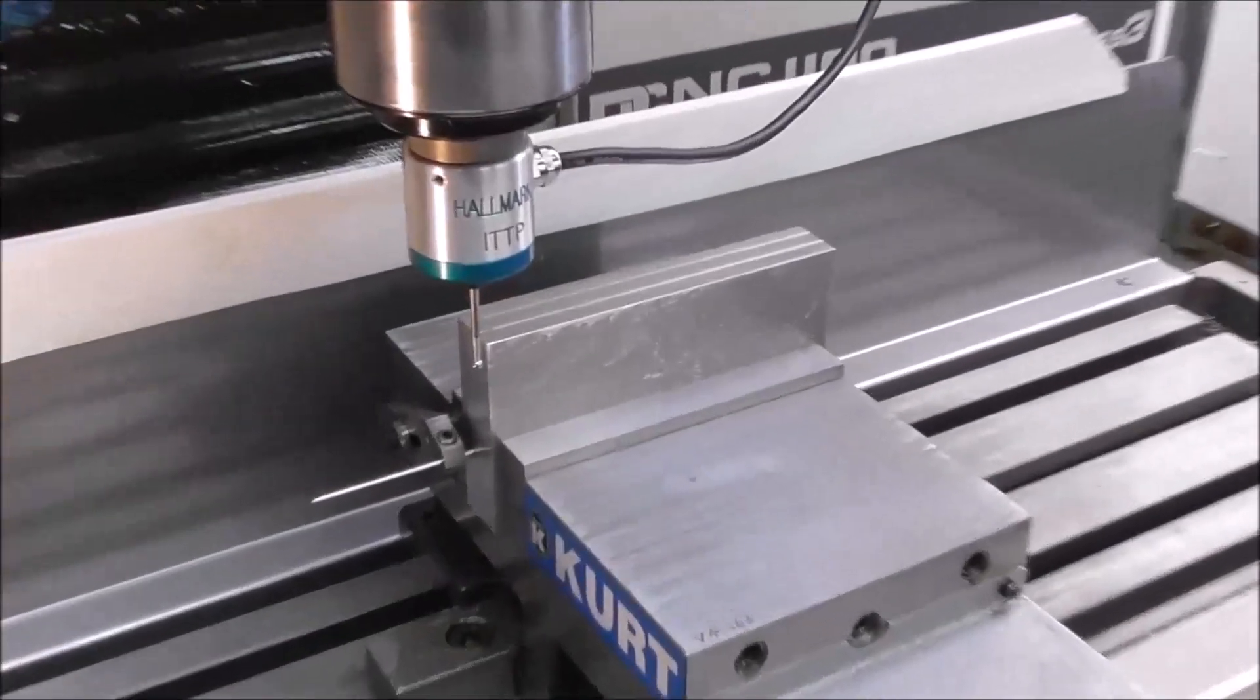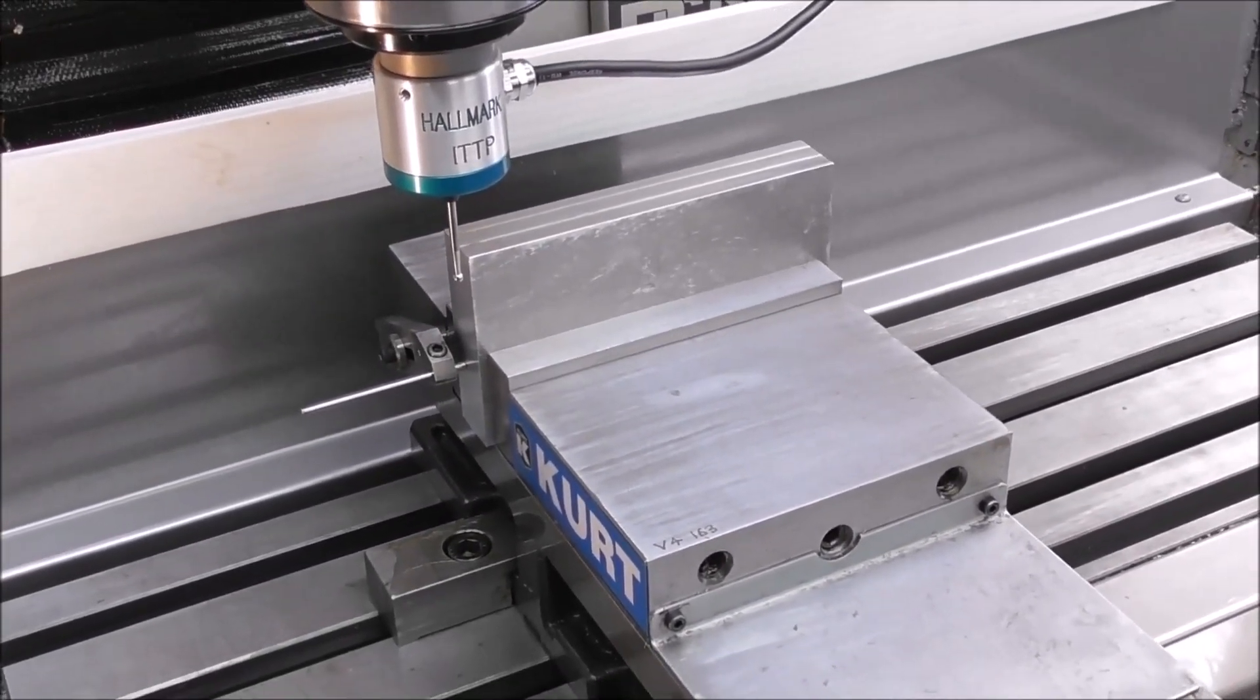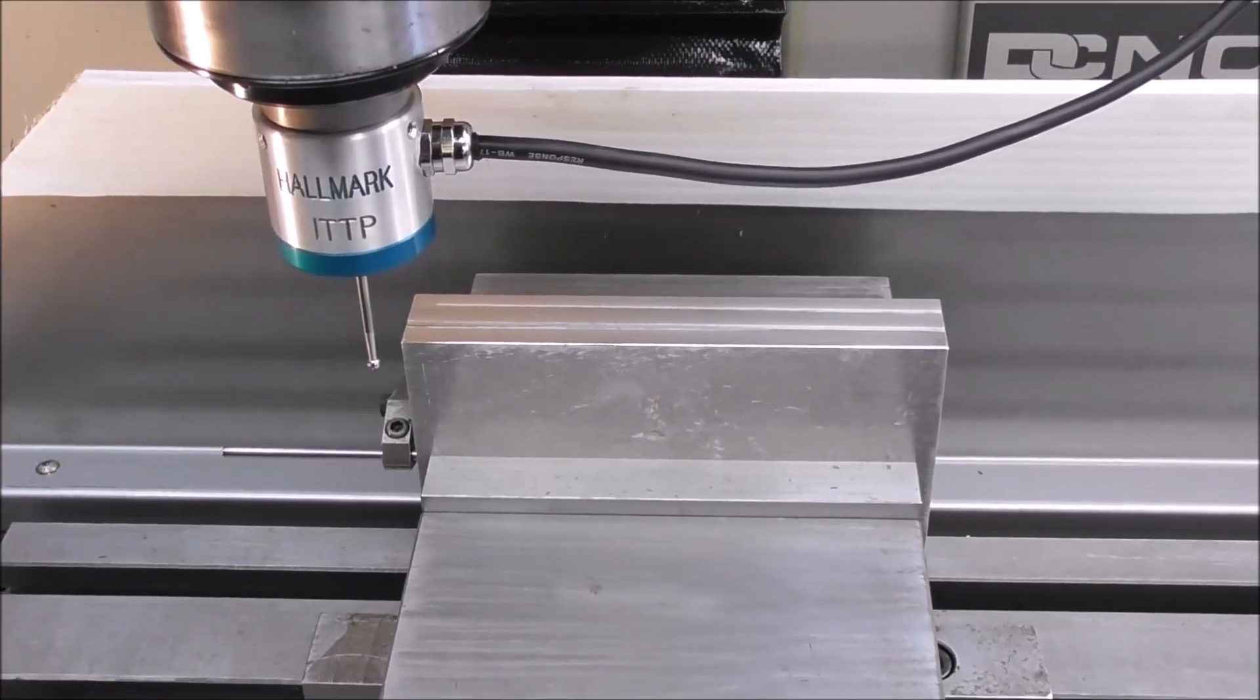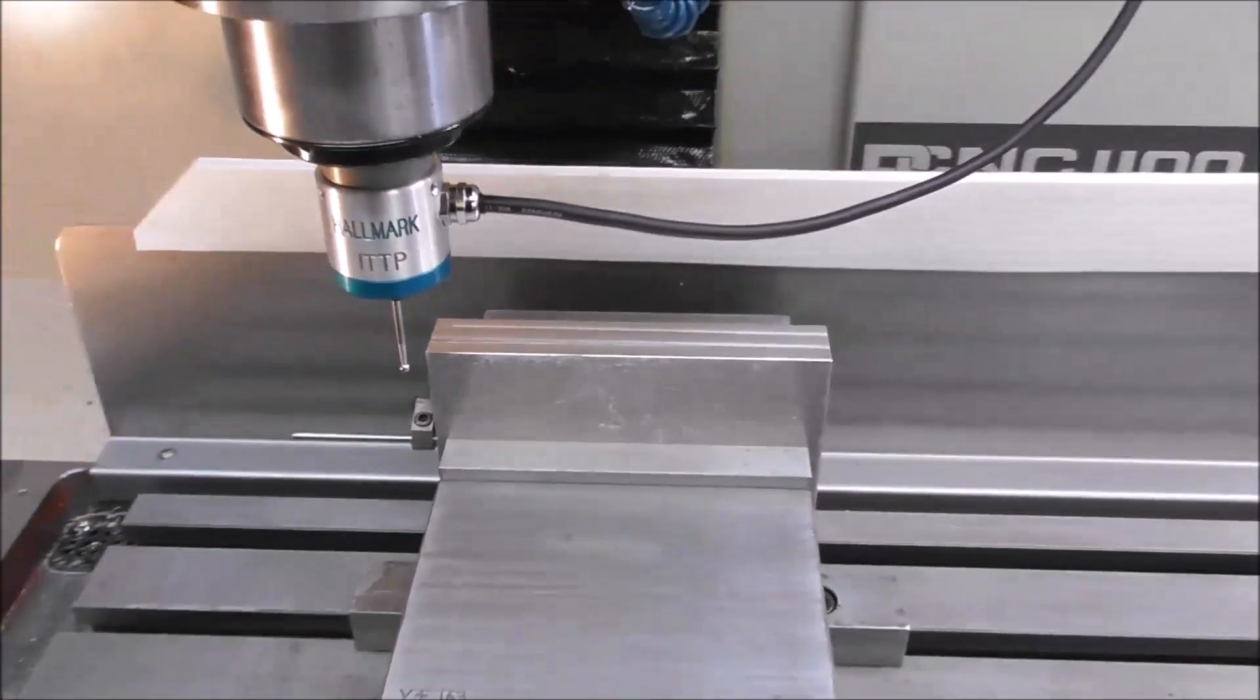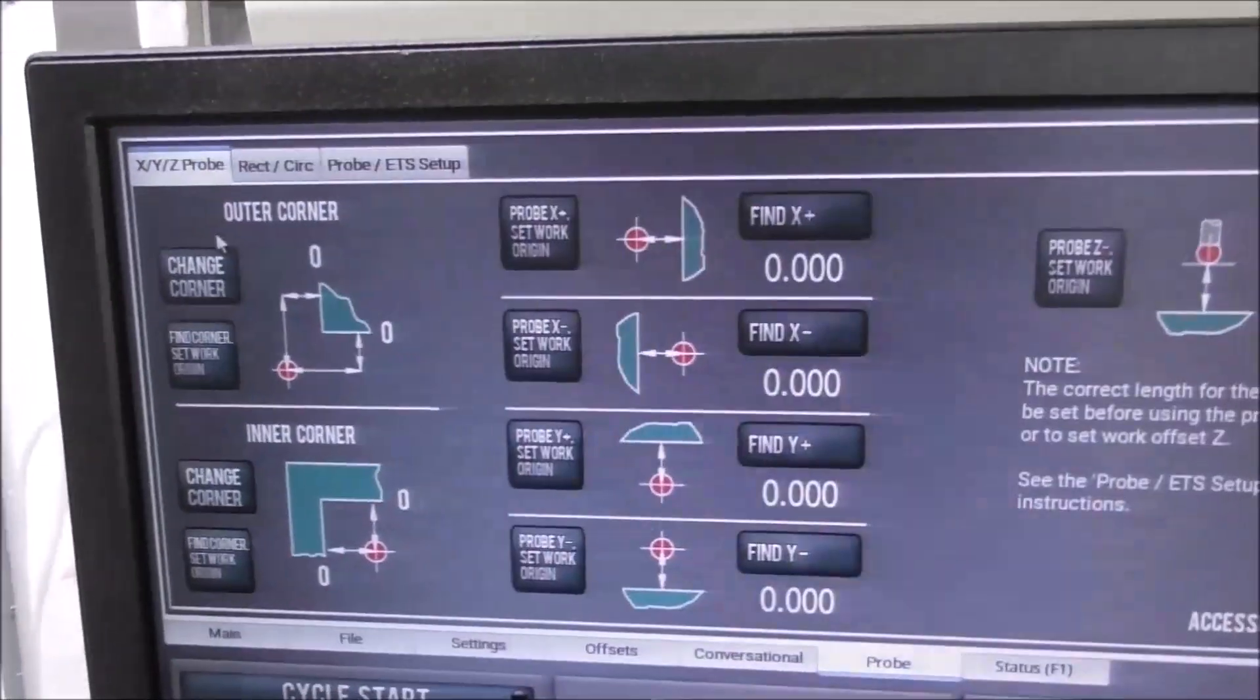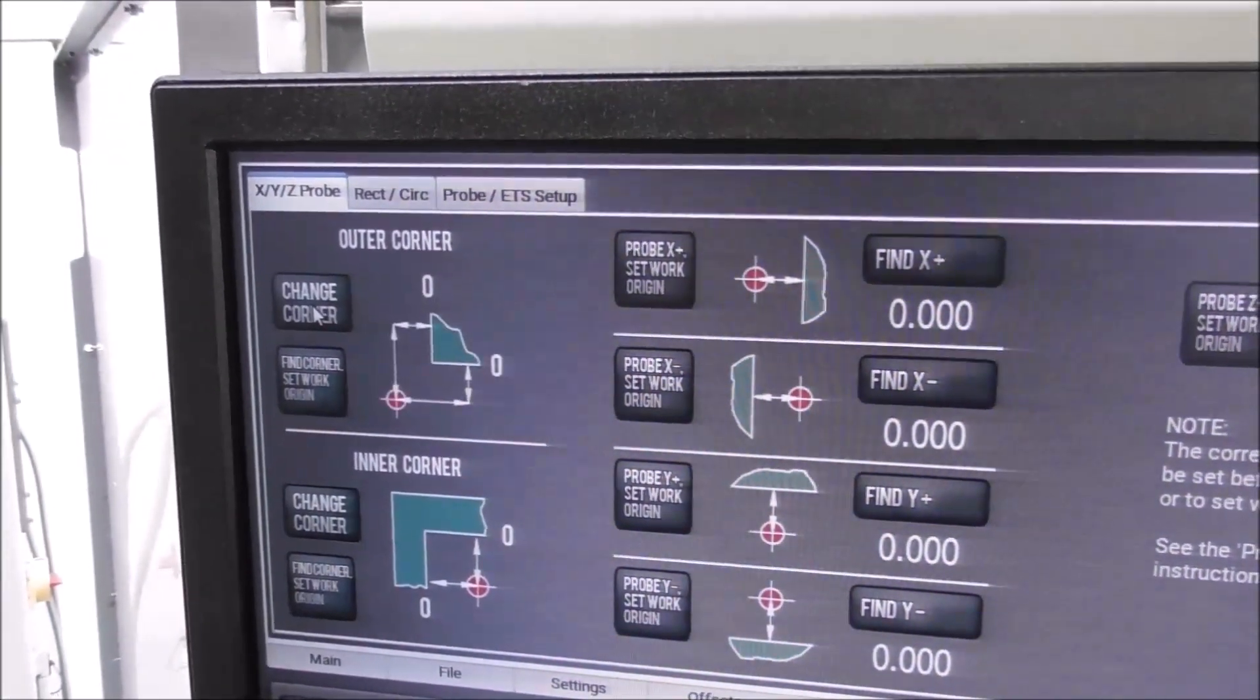That way you can just quickly find that corner with that probing routine. In this case with my end stop, I might want to locate multiple parts off the front left corner. I just park my probe there and then go up to the software. With the graphic display, you can just choose the one that looks right.